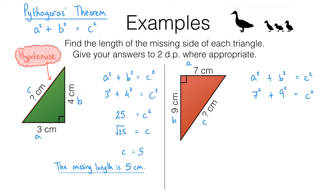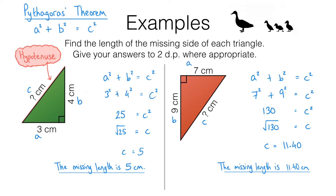Now 7 squared is 49 and 9 squared is 81. If you add those together you get 130, so 130 equals C squared. C is going to be the square root of 130. You wouldn't be expected to do that in your head — if we pop that into our calculator we find that the square root of 130 is 11.401. We only need to round to two decimal places, so that's 11.40. The missing length is 11.40 centimetres correct to two decimal places.